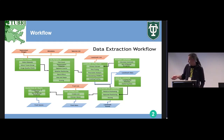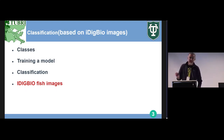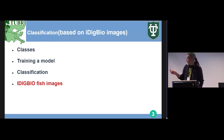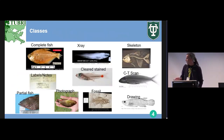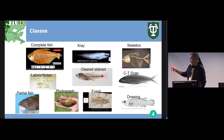To address this problem, we tried to create a model that identifies and classifies images into different classes. These classes include complete fish images, X-ray images, CT scan images, cleared and stained images, labels, notes, partial fish, photographic sources, and others. We defined 10 classes in total.